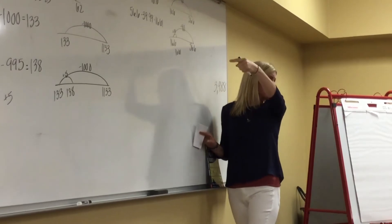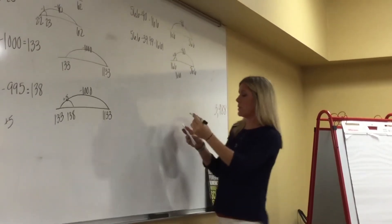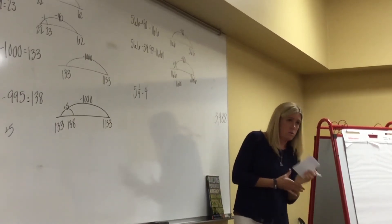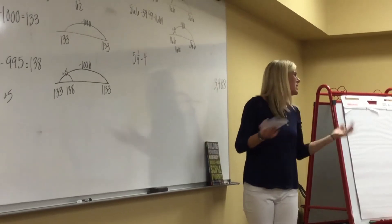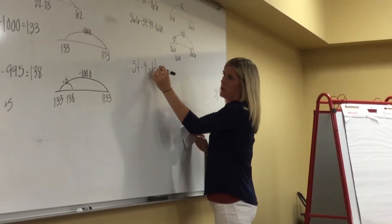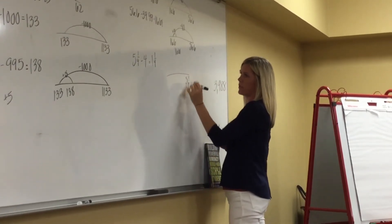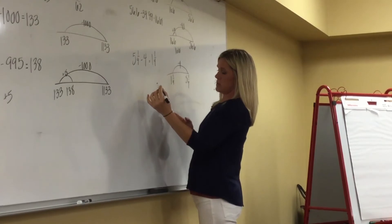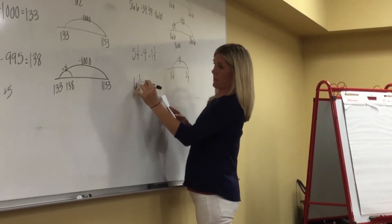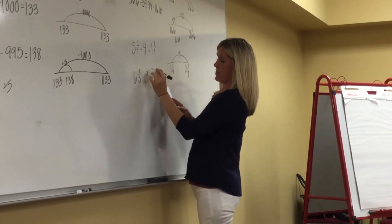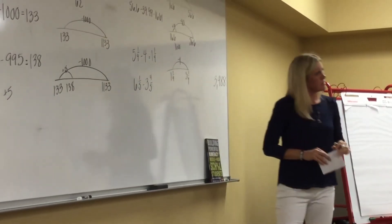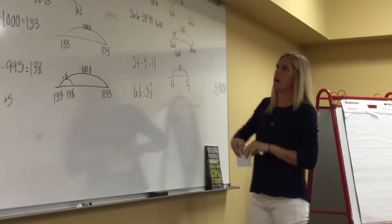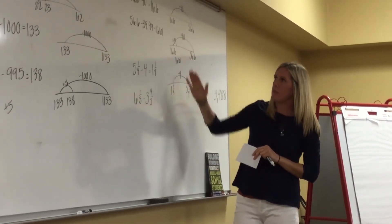Took off 40 and then added a penny back on. Did anyone else do the same thing — took off too much and then added some back on? Okay cool. What about this one: 5 and one fourth minus 4? I'm going to represent that by saying I know 5 and a fourth minus 4 is going to put me at 1 and a fourth. So let me ask you: what is 6 and one fifth minus 3 and four fifths? I wonder if you can use this idea of taking off too much and then adjusting.